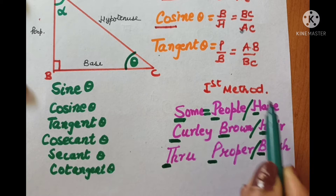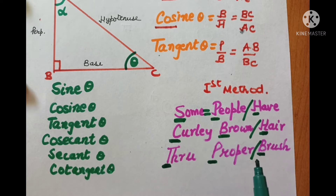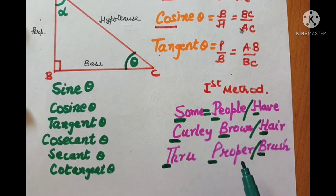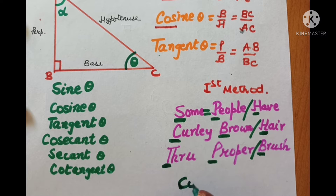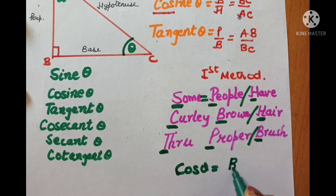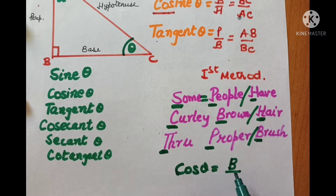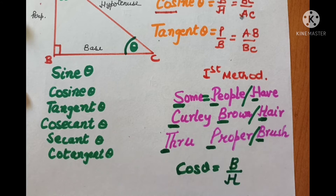You don't have to recite the whole poem if you want the value of cos. You simply say 'curly brown hair.' When you say curly brown hair, you speak 'brown' and write B, you speak 'hair' and write H — and it gives you the formula: cos theta is equal to base upon hypotenuse. So, this is the first method.